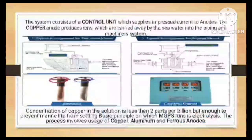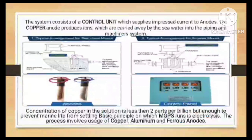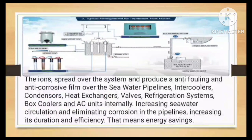The system consists of a control unit which supplies impressed current to anodes. The copper anode produces ions which are carried away by the seawater into the pipeline and machinery system. Concentration of copper in the solution is less than 2 parts per billion, but enough to prevent marine life from settling. The basic principle on which MGPS runs is electrolysis. The process involves usage of copper, aluminum and ferrous anodes.